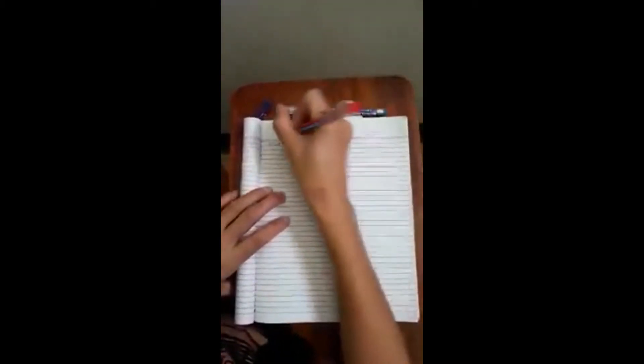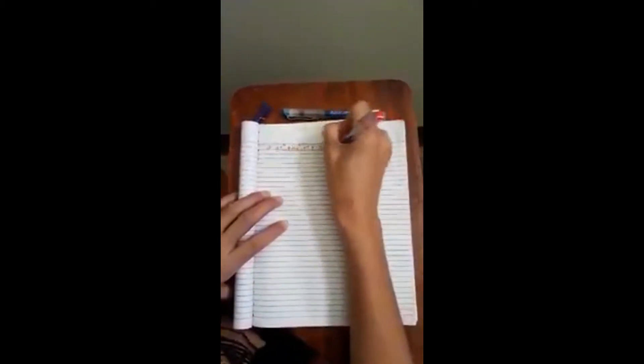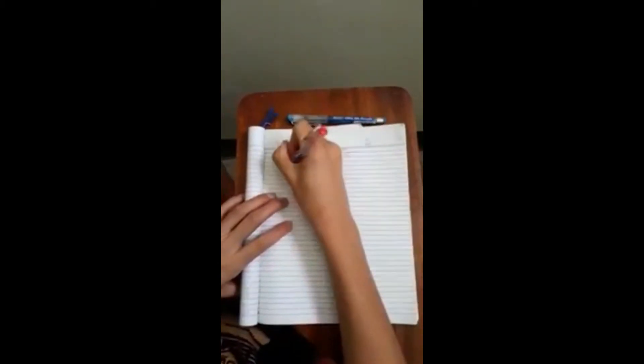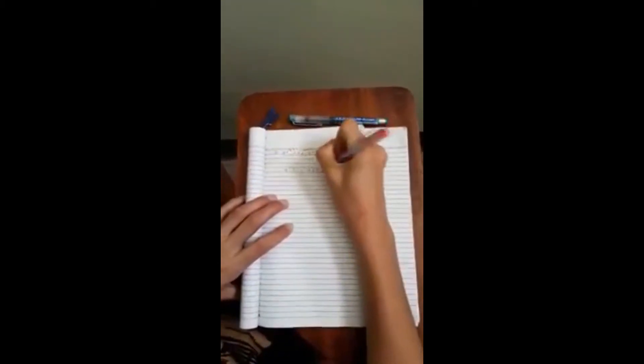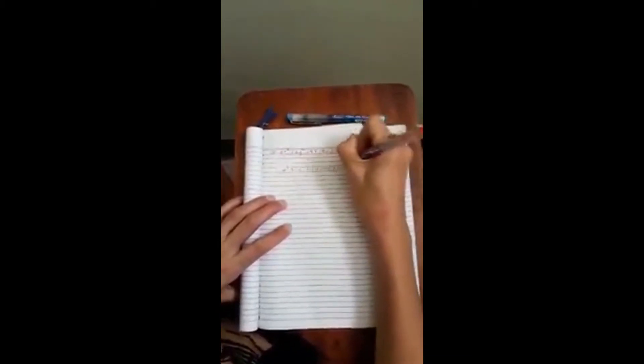First, we will divide it by 2. So it will become x squared plus y squared plus 2x minus 4y plus 5 equals 0.